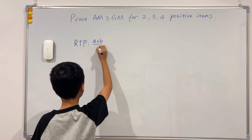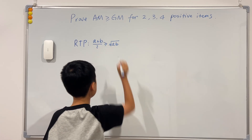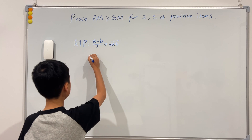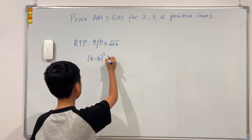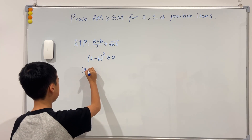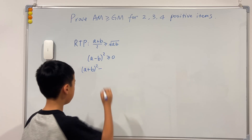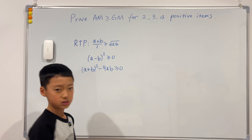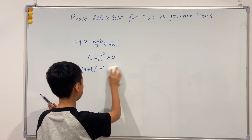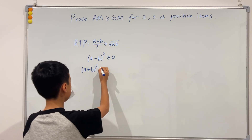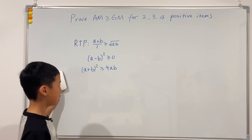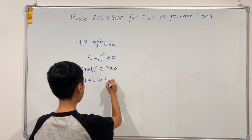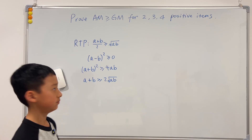What we need to prove is (a + b) / 2 ≥ √(ab). This has many proofs, but I'll show one. We know that (a - b)² ≥ 0, which expands to (a + b)² - 4ab ≥ 0. From here we know (a + b)² ≥ 4ab, and taking the square root gives us a + b ≥ 2√(ab). Proved.